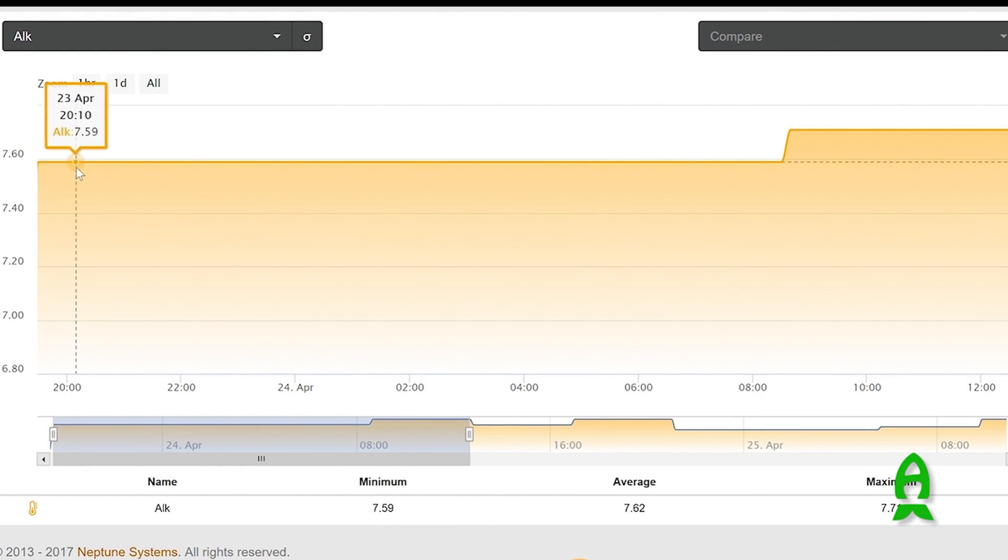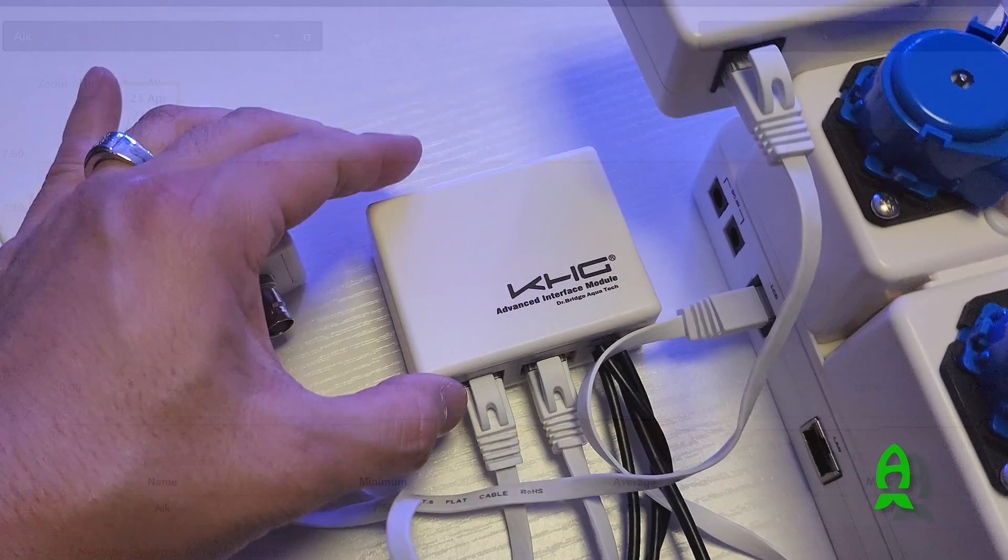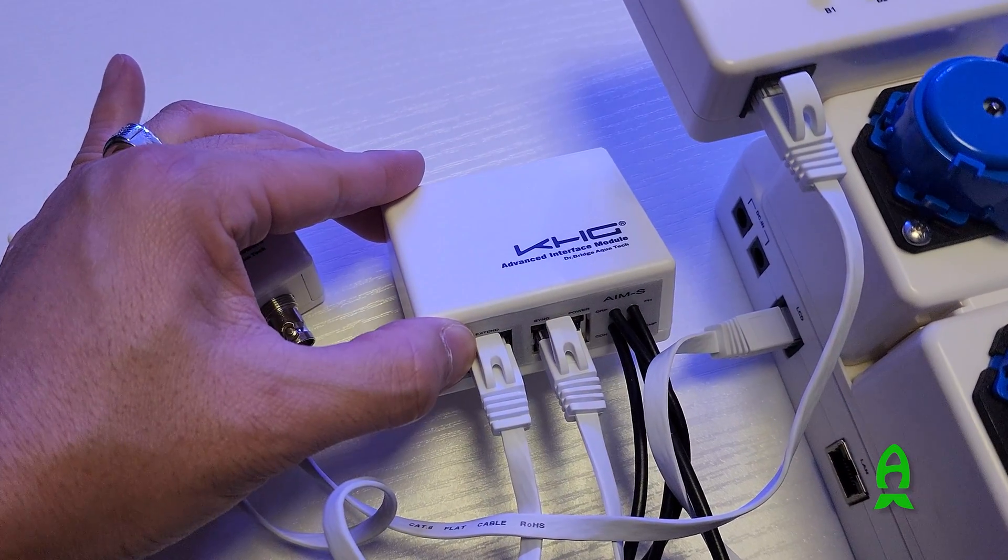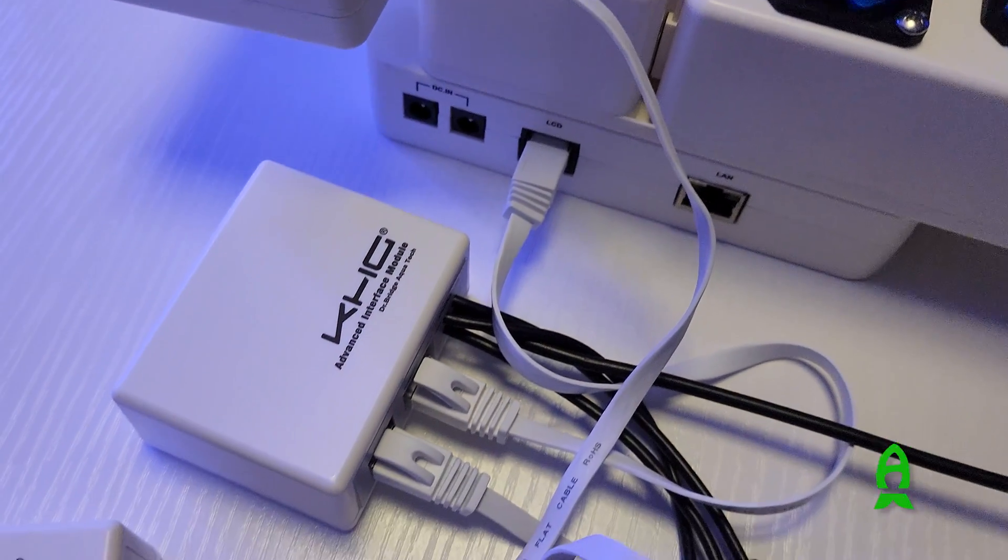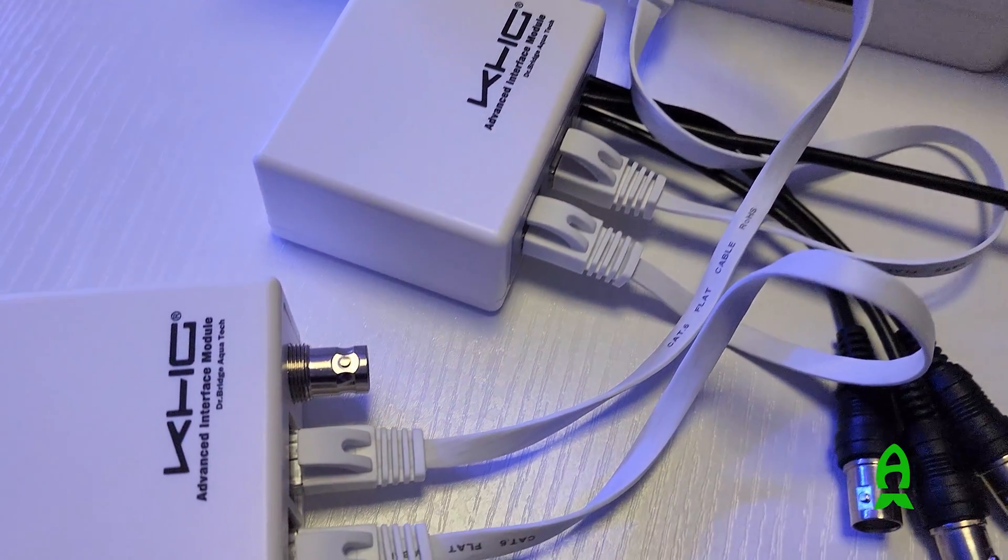Now, they have a second version of the module, which is called AIMS. Now it gives you the ability to do standalone pH or ORP reading, salinity reading, and temperature reading. Also get this, you get a conductivity probe and a temperature probe and the AIMS module for just $50.